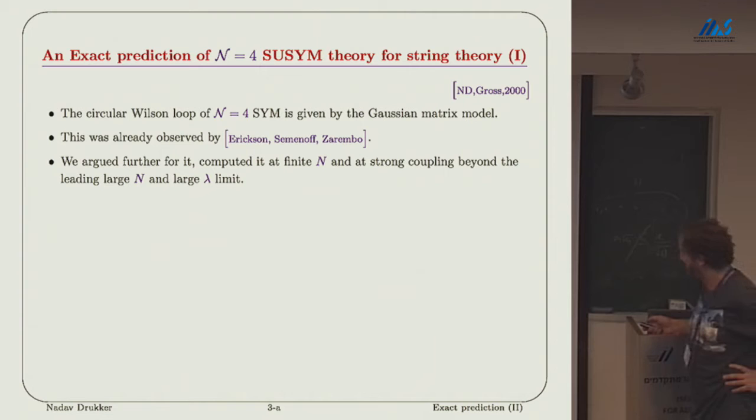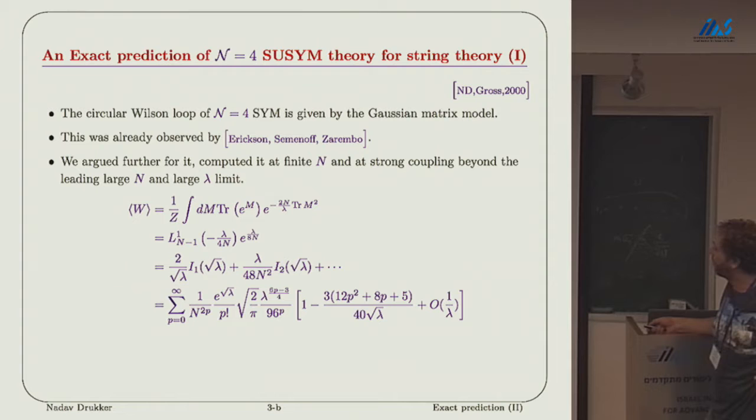The Schur index of N equals four super Yang-Mills and how we can solve it exactly. The circular Wilson loop is given by a Gaussian matrix model, this was already known previously by Erickson, Semenoff, and Zarembo. What we did was solve it at finite N and at strong coupling beyond the large N and large lambda limit.